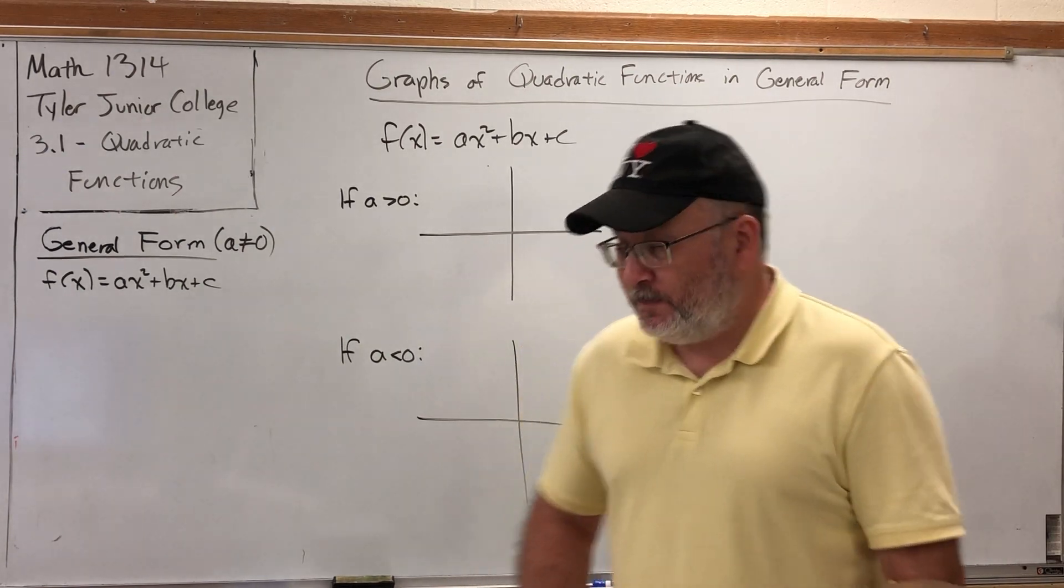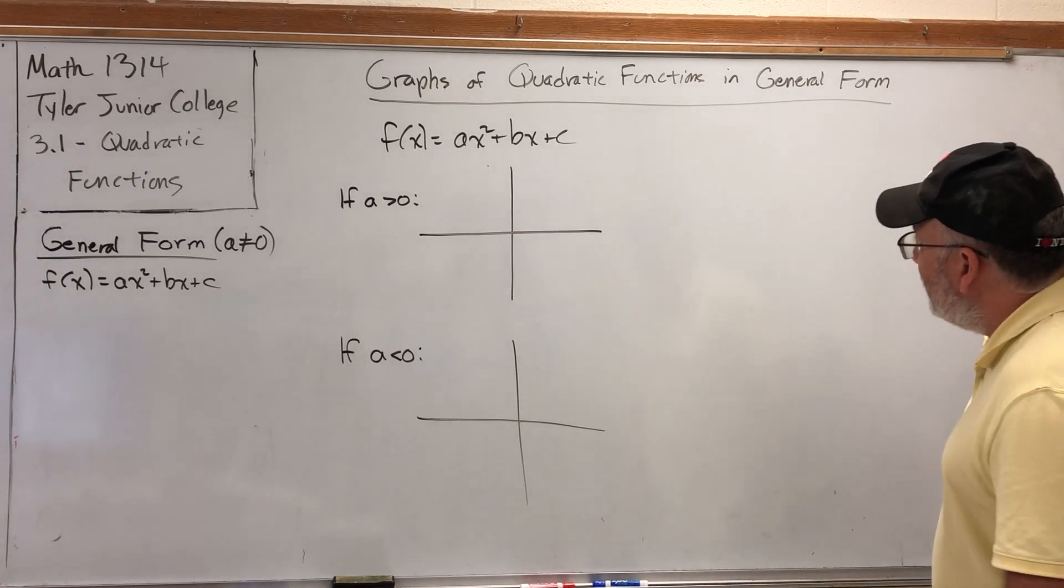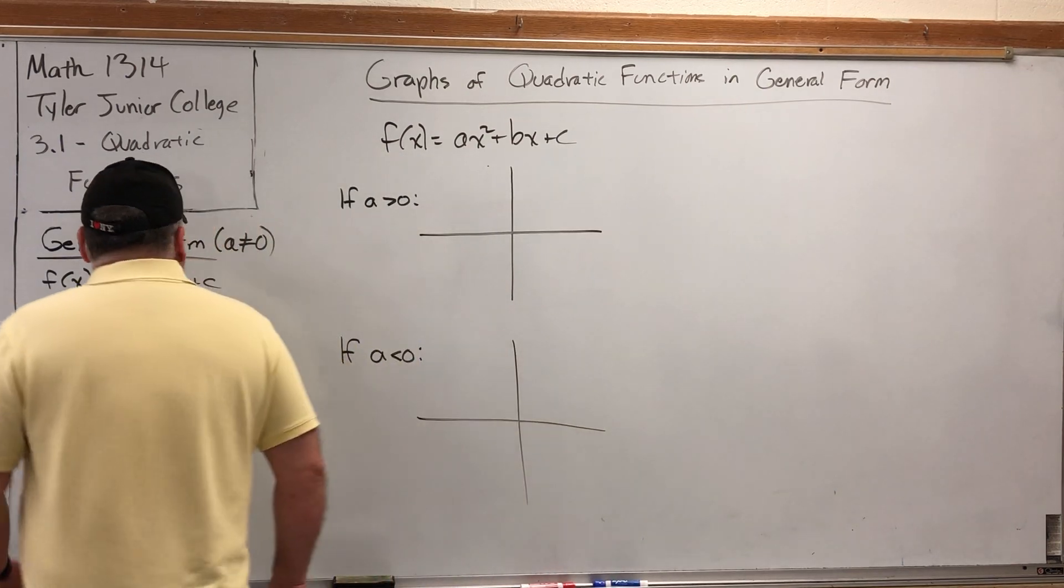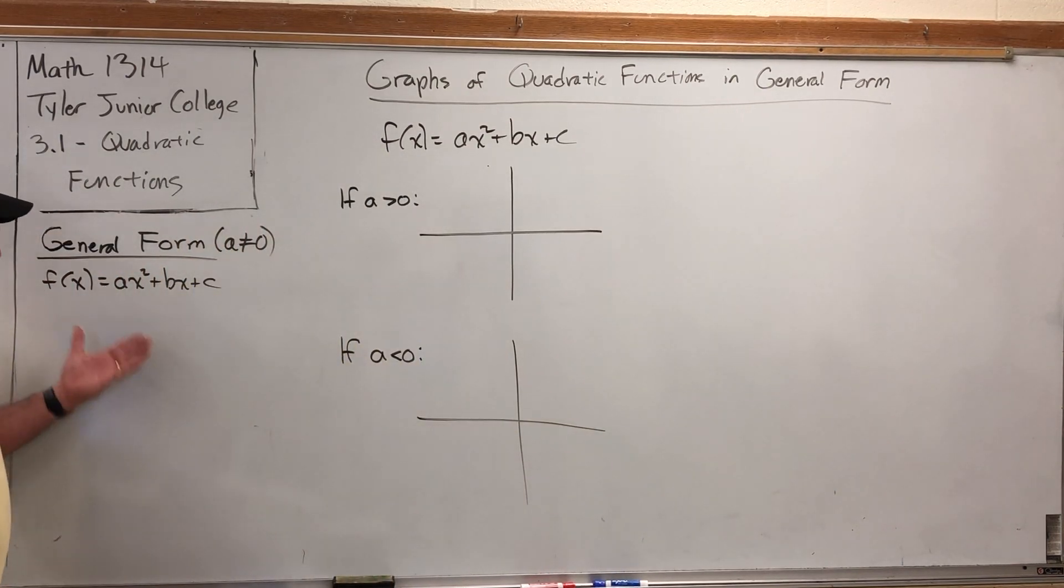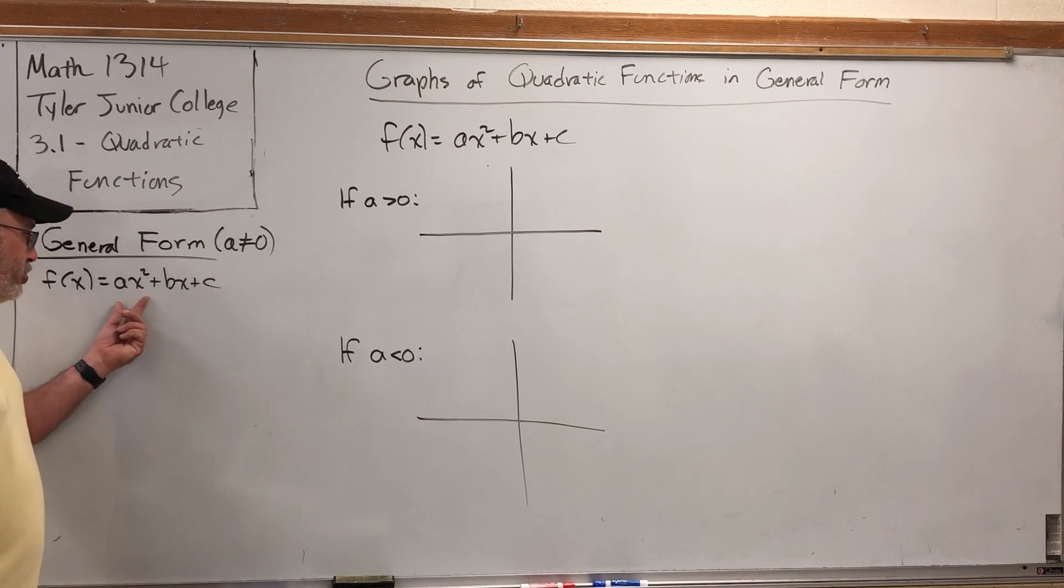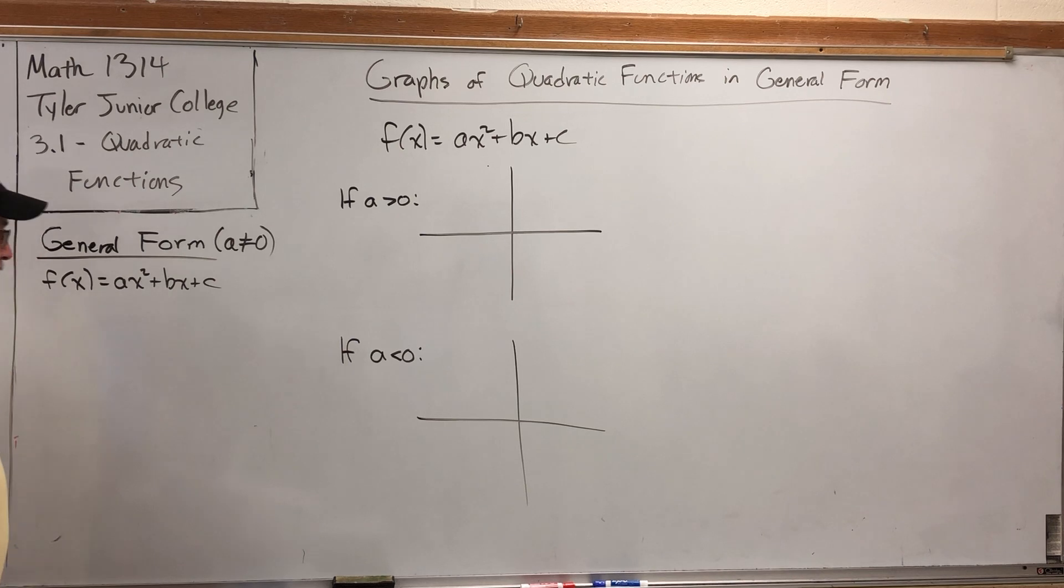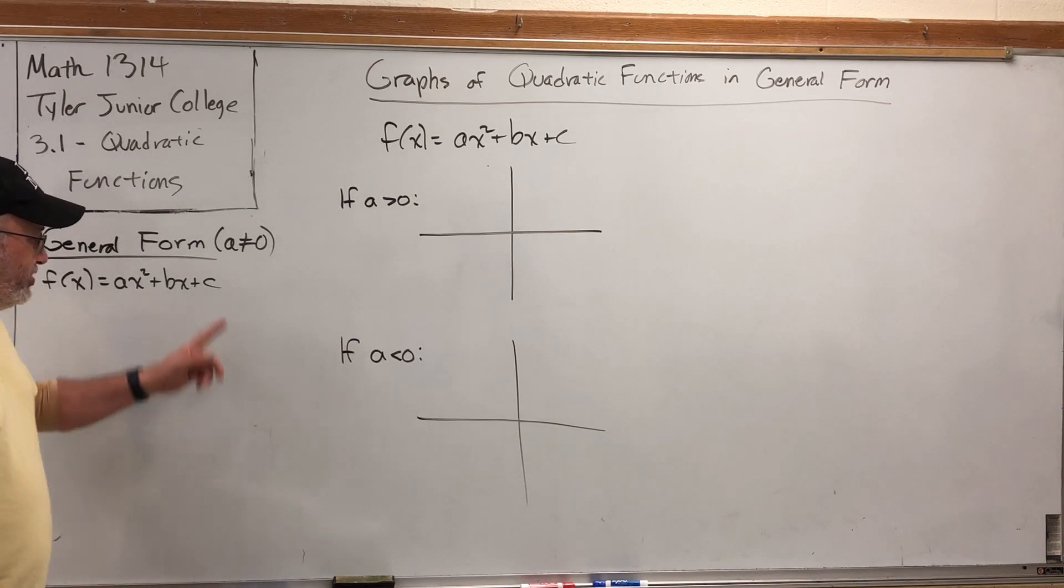Let's talk about graphs of quadratic functions in general form. A quadratic in general form is a function f(x) = ax² + bx + c, where a is not equal to zero. It's assumed that a, b, and c are real numbers.